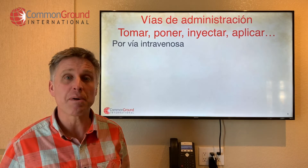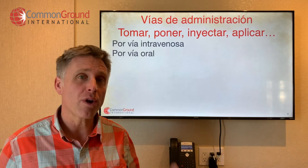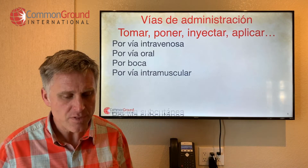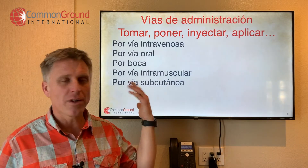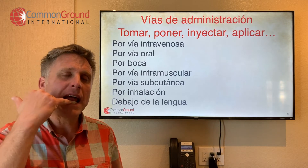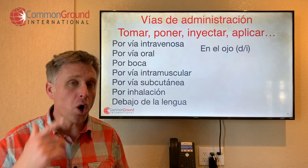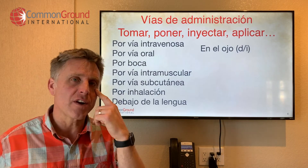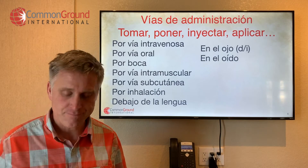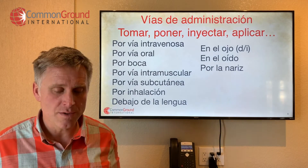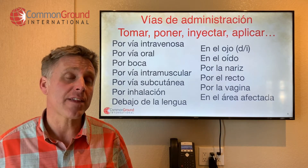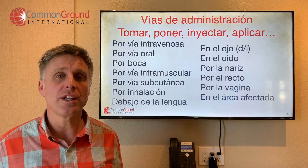Por vía intravenosa — by IV. Por vía oral — by mouth. Por boca — also by mouth. Por vía intramuscular — intramuscular. Por vía subcutánea — all these make sense to you because they're just like English. Por inhalación, debajo de la lengua — under the tongue, en el ojo derecho, en el ojo izquierdo — D for derecho, I for izquierdo. En el oído, por la nariz — in the nose, por el recto — in the rectum, por la vagina, en el área afectada — on the affected area.